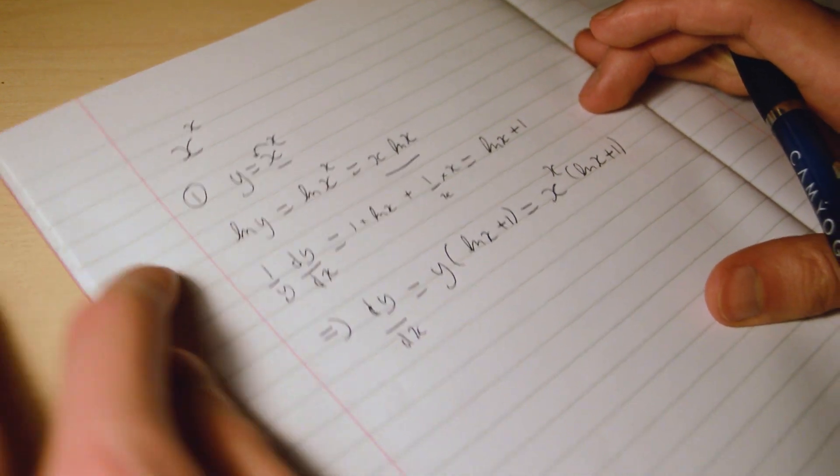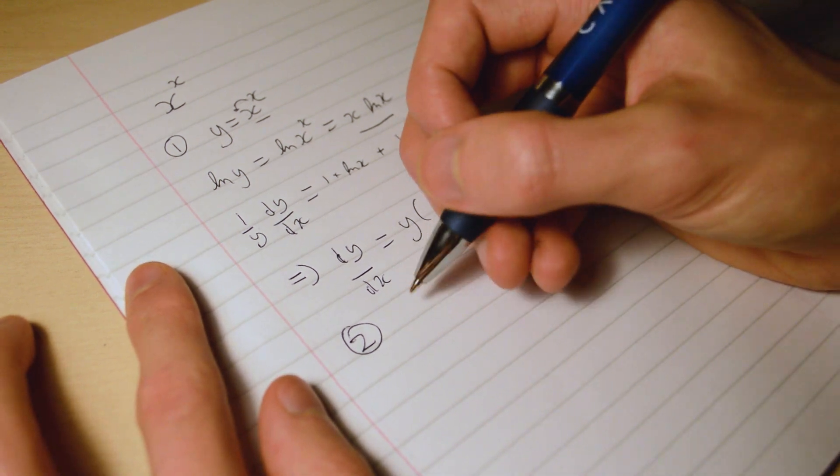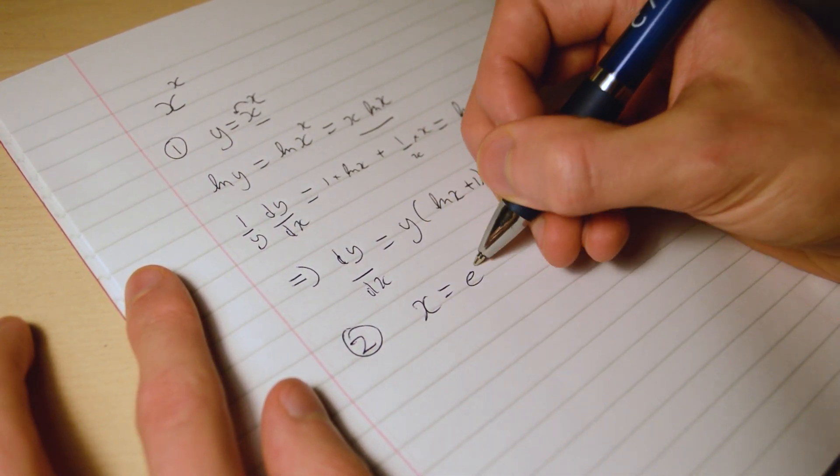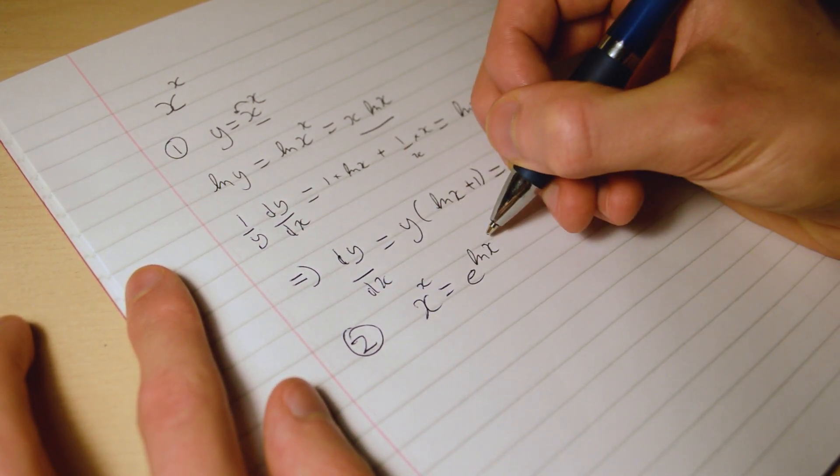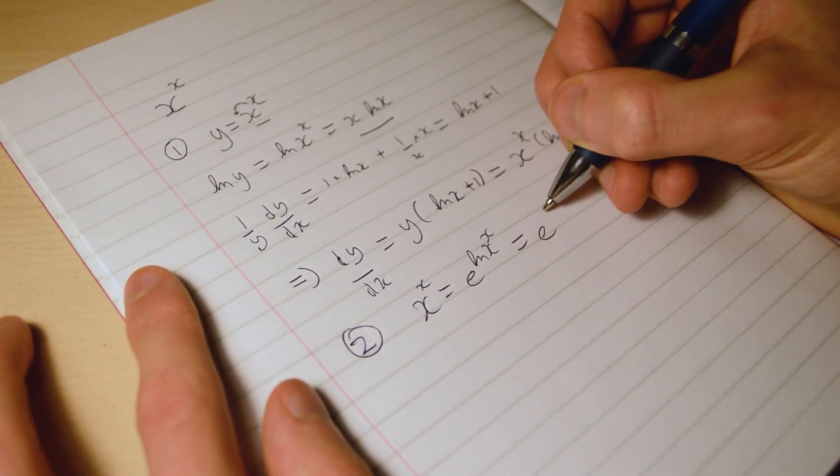Now there's a more direct approach to doing this, but it's a bit more tricky. So what we're going to notice is that x is equal to e to the power of log x, so x to the x is equal to e to the power of log x to the power of x, which is equal to e to the x log x.